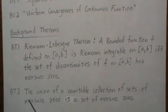Theorem 2: The union of a countable collection of sets of measure zero is a set of measure zero.